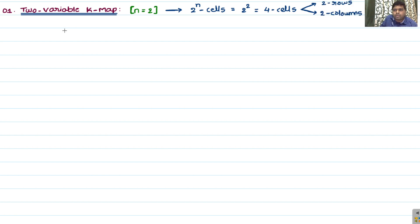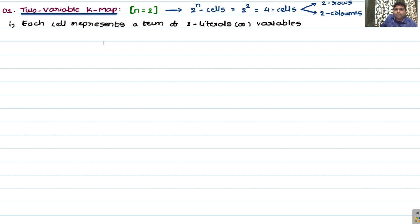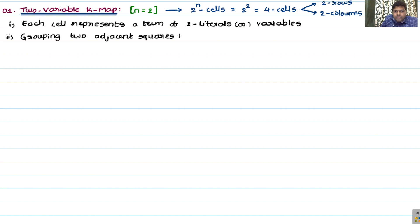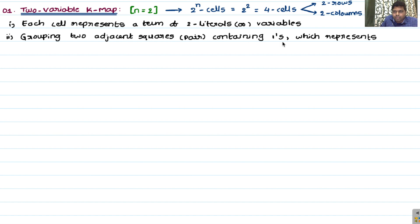The first point: each cell represents a term of two literals or variables. The second point: grouping two adjacent squares — a pair — containing ones, which represents a term of one literal or variable.